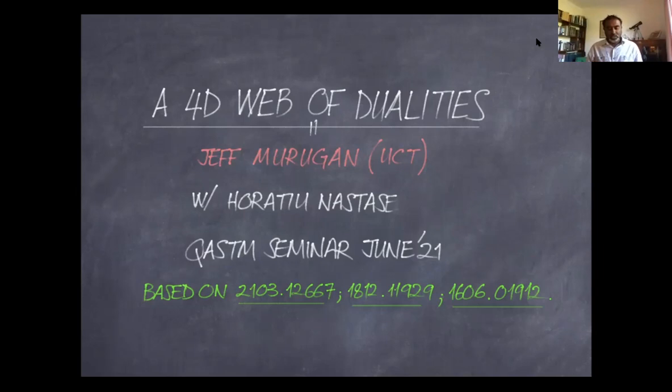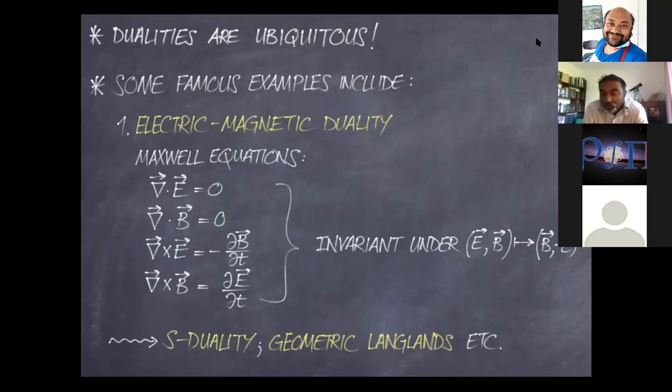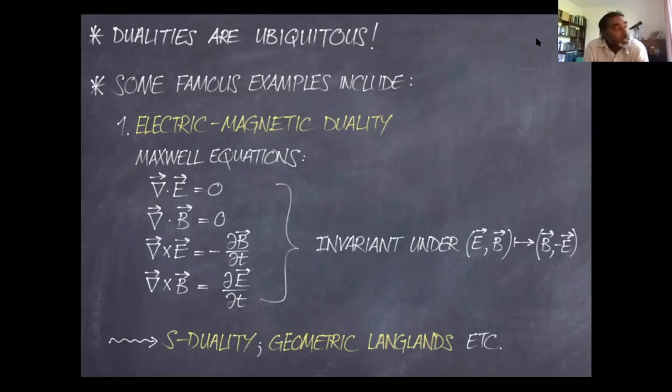This story starts with the observation that dualities are really everywhere — they're ubiquitous. They show up in many different aspects of physics, and in most cases we really welcome the role they play in systems we're studying, because they help simplify the physics quite significantly. Let me go through some famous examples you may have heard about already.